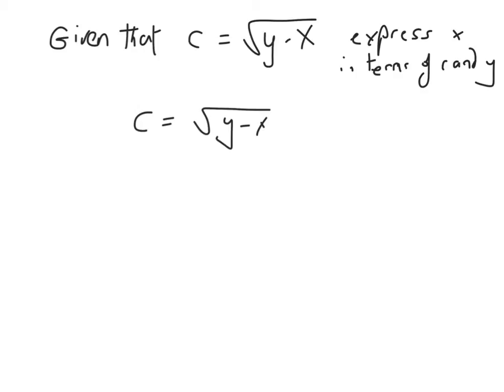We need to get x on its own, basically. That's what this is saying. x must be equal to an expression with c and y in it. So we need to get this guy on its own. Obviously, the first thing we need to do is get rid of the square root.